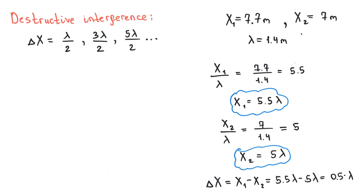What conditions must be met to get constructive interference? For constructive interference, the difference delta x must be equal to integer numbers of wavelengths. i.e., x1 minus x2 must be equal to lambda or 2 lambdas or 3 lambdas and so on.